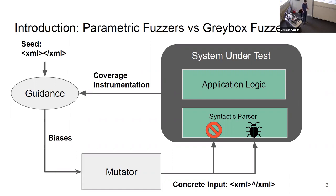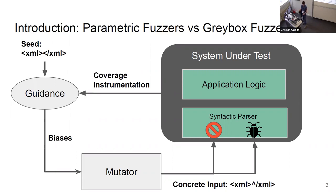That is, they don't necessarily produce many syntactically valid inputs that would actuate vulnerabilities like those shown in the previous slide. On the diagram, you can see a depiction of such a fuzzer. It chooses a concrete XML file, either from a seed or from some queue based on coverage instrumentation, and mutates it in some way. In this example, we insert a character into the original input, and it gets caught within the syntactic parser. The system under test may reject the input or reveal a bug.